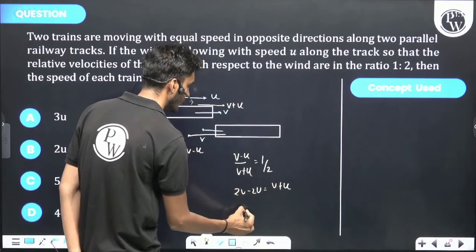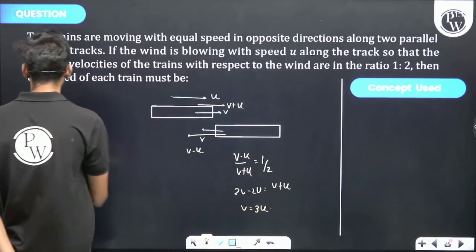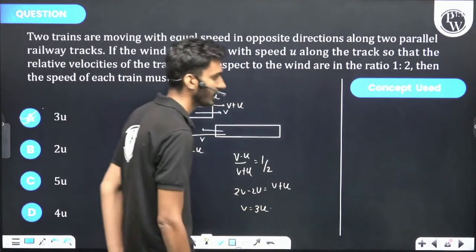So v ki value kitnay hai? 3u. Required velocity of train is equal to 3u. Option A is correct.